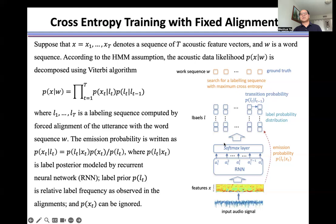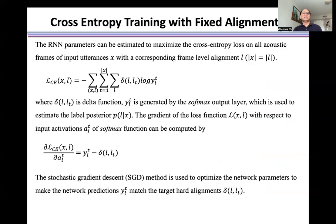The softmax layer output cross entropy loss is used to find a labeling sequence with maximum cross entropy. The RNN parameters can be estimated to maximize cross entropy loss on all acoustic frames of input utterances x with the corresponding frame level alignment l.